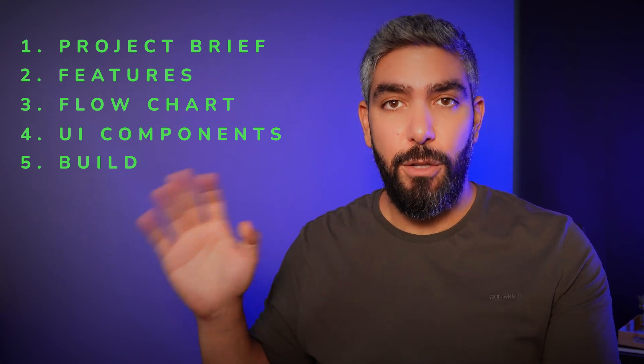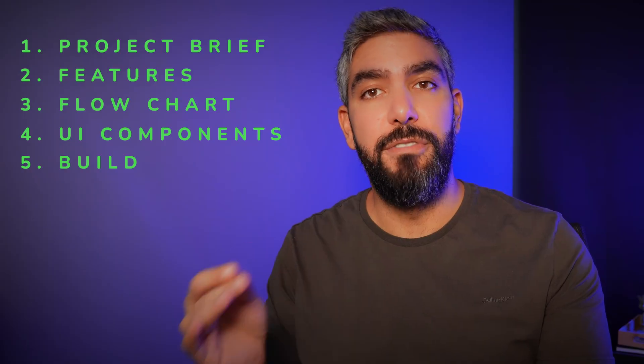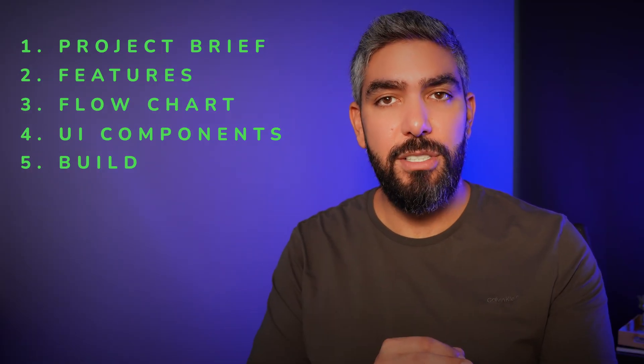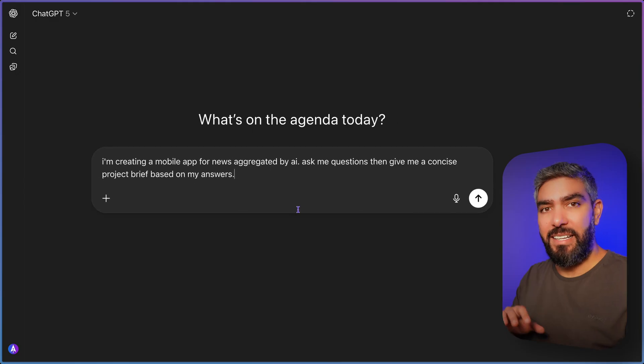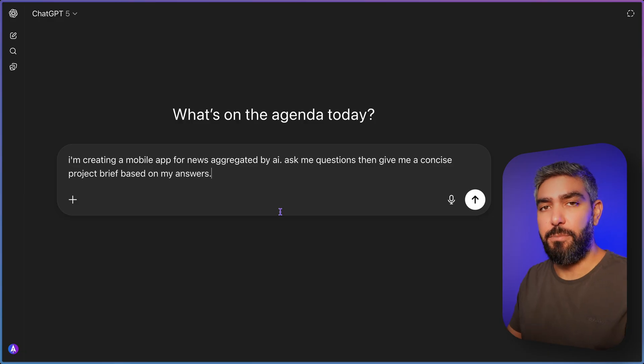The other benefit of following this workflow is that you will be able to direct the project towards your vision. You will be in control at every step of the way, making design decisions and approving the AI output. Follow along — this is going to be super easy. Start by giving your idea to ChatGPT and ask for a concise project brief. Always ask it to ask you questions — it's a really simple and effective way.